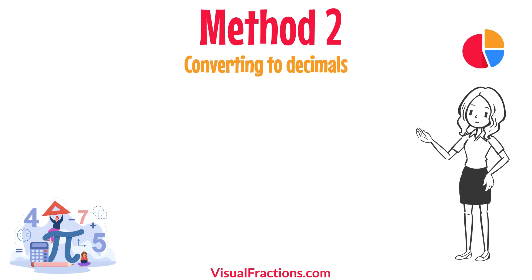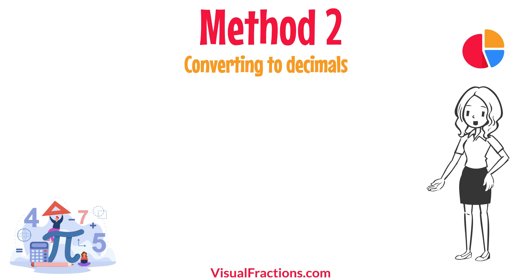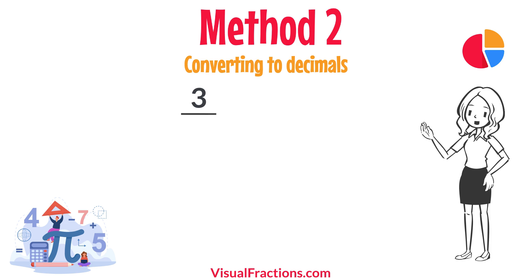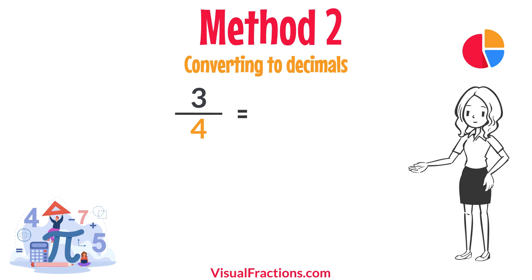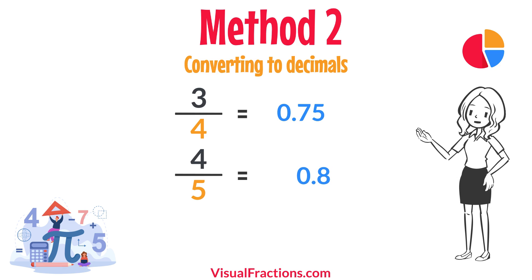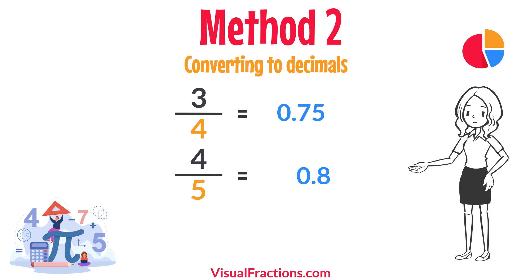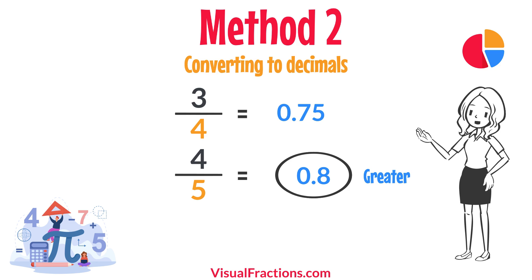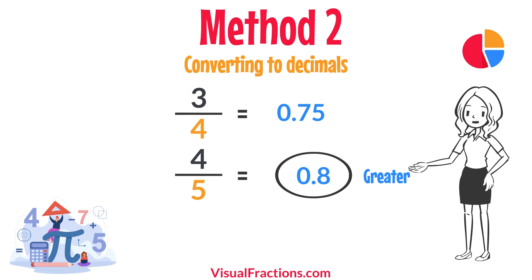For a second method, let's convert each fraction to a decimal. Using a calculator, divide 3 by 4 to get 0.75, and divide 4 by 5 to get 0.8. This shows that 0.8 is greater than 0.75, confirming that 4 fifths is indeed greater than 3 quarters.